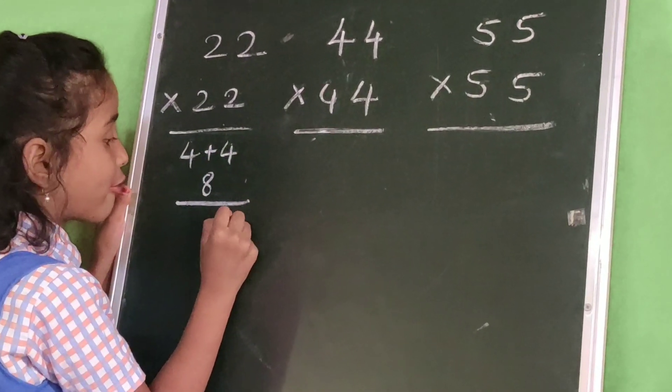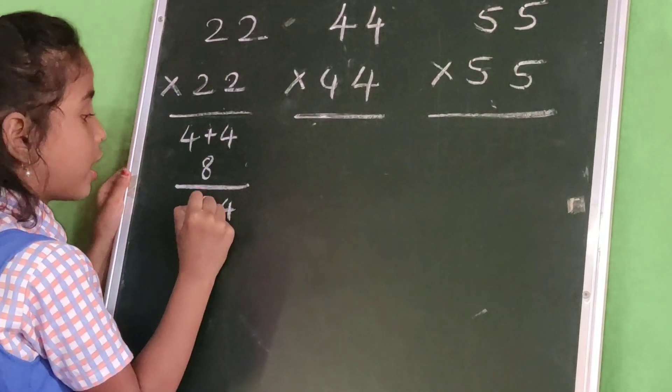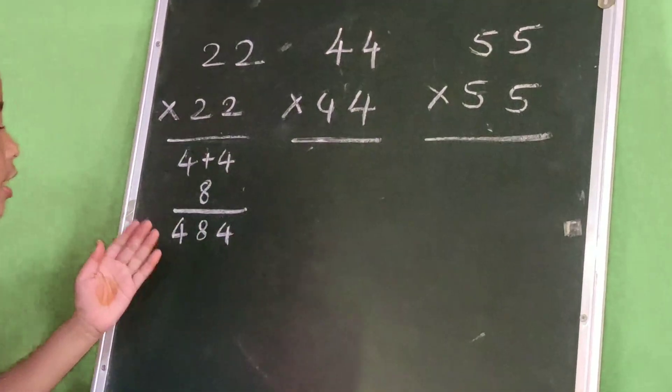4 as this, 4. 8 as this, 8. 4 as this, 4. The answer is 484.